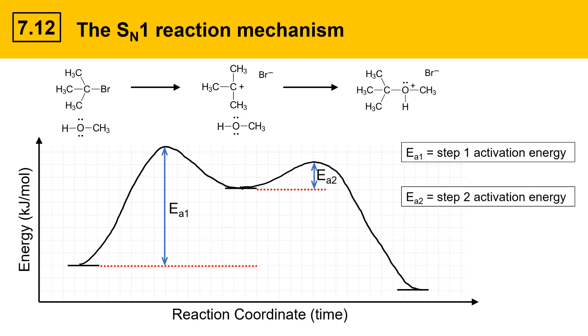That's the activation energy of the second step of the mechanism. If you look at the differences between E sub A1 and E sub A2, E sub A1 is quite a bit bigger, and that is why it ends up being the rate determining step.